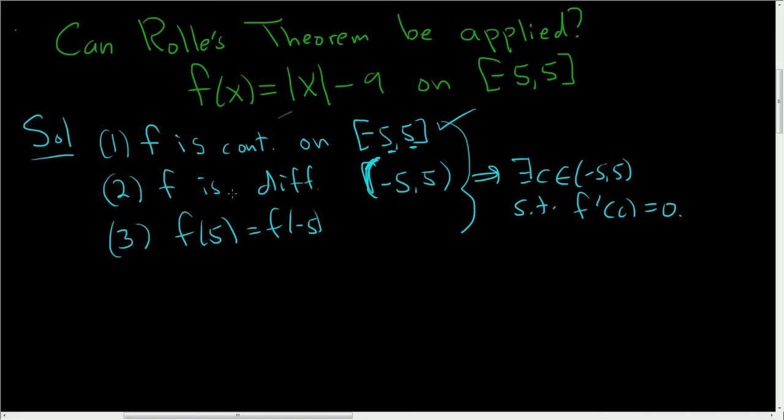The second condition, though, that's one you should think about because we do have an absolute value function. Let's look at the absolute value of x. The absolute value of x is not differentiable at 0. So what about our function? Well, our function is the absolute value of x shifted down by 9.